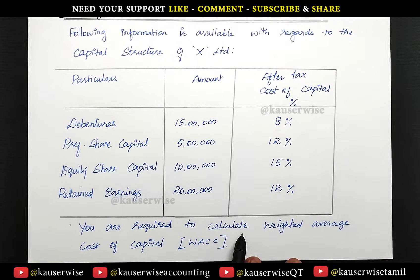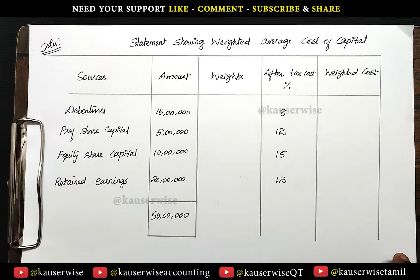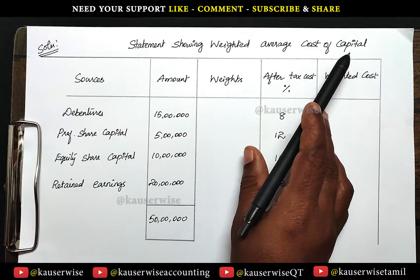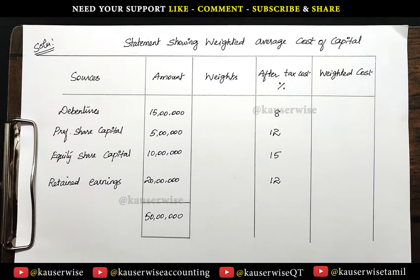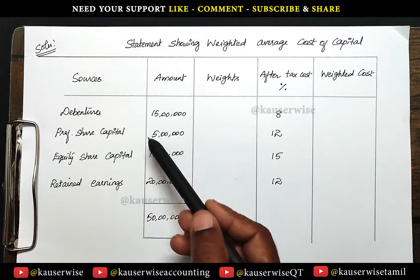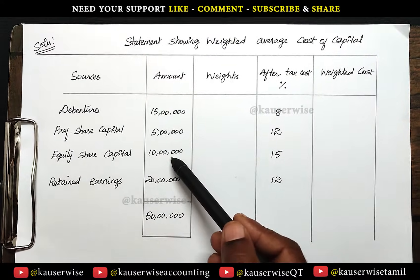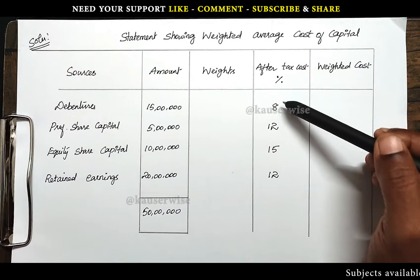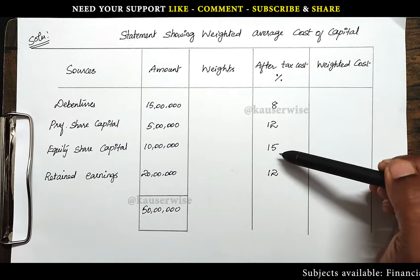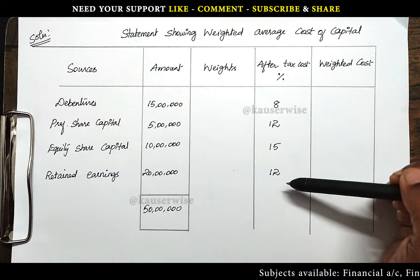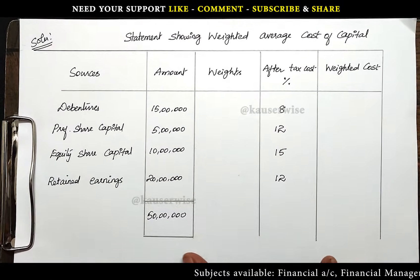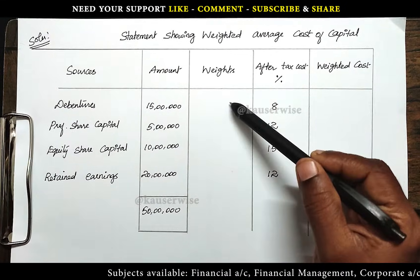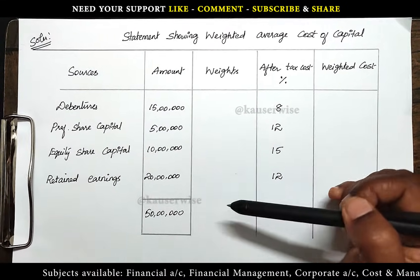Now we are going to see only how to calculate weighted average cost of capital when all the components are given in the problem. You are required to calculate the weighted average cost of capital. Statement showing weighted average cost of capital. Sources: debentures, preference share capital, equity share capital, retained earnings, and the after-tax cost also given: 8%, 12%, 15%, and 12%.